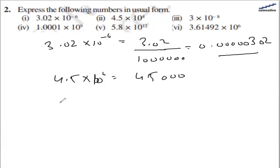In the third part, we have 3 × 10^-8, and that will be 0.00000003.